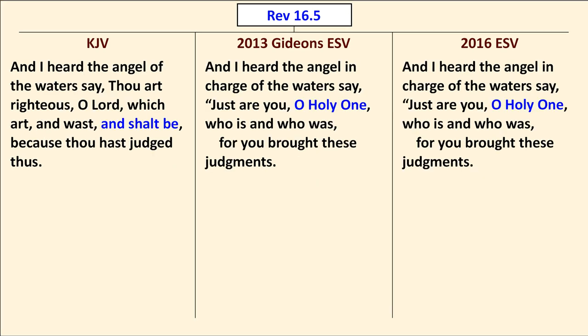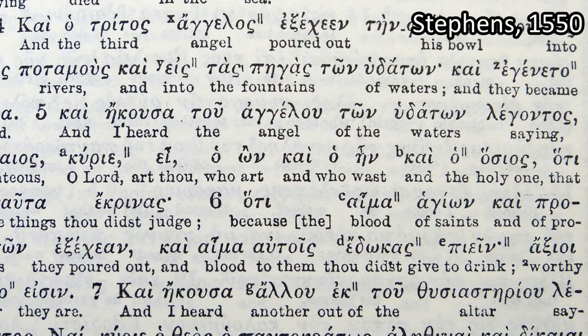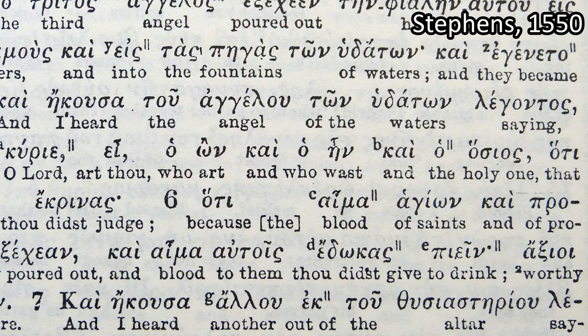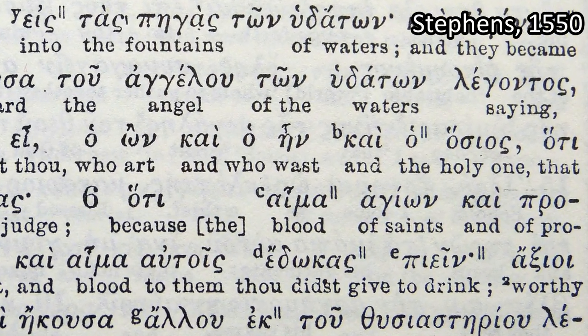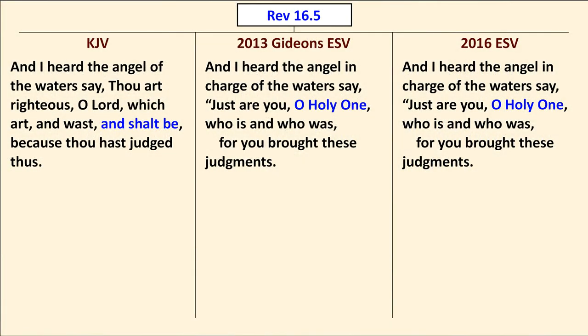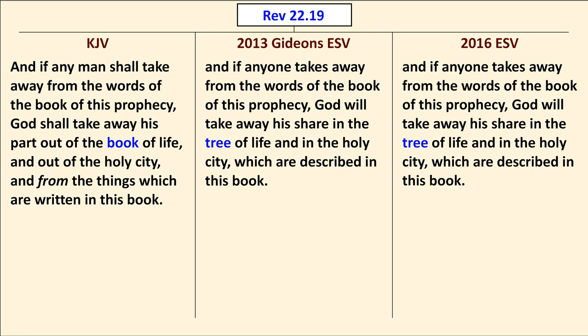Finally in Revelation 22, the King James Version following the TR has "the Book of Life," but the Gideon's ESV did not follow the TR here — it says "Tree of Life" in agreement with the 2016 ESV.